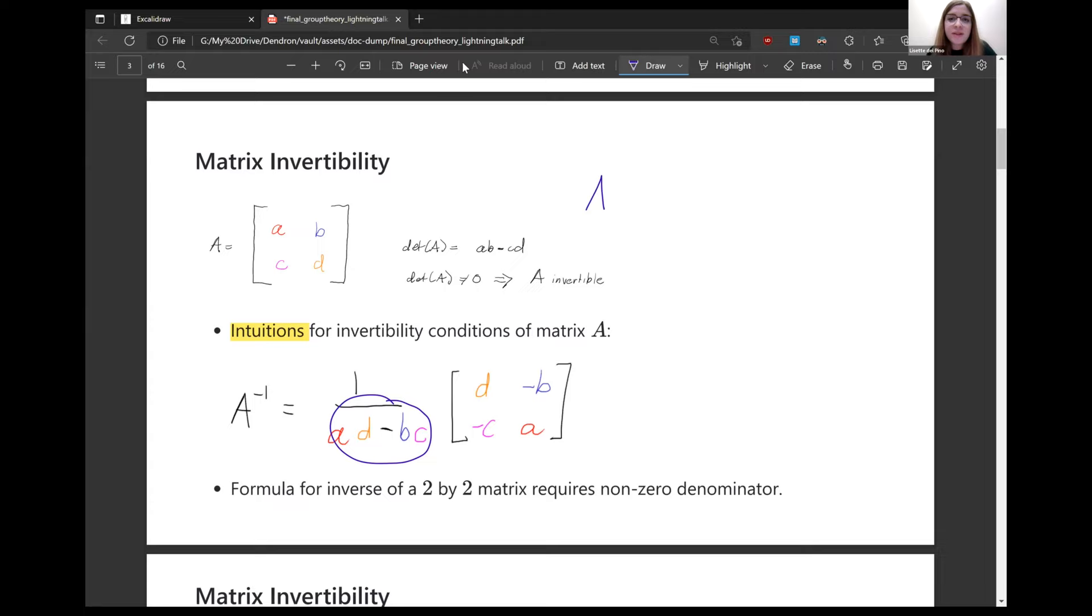The first intuition is that literally the formula for a 2x2 matrix inverse is 1 over its determinant times its adjoint. So what happens if the determinant is 0? We have issues in the denominator. This is undefined division. So I guess it's the more boring intuition for why a 2x2 matrix needs to be invertible.